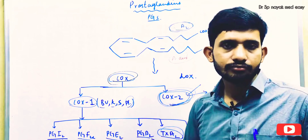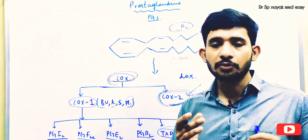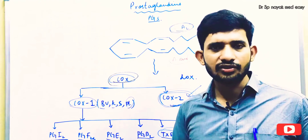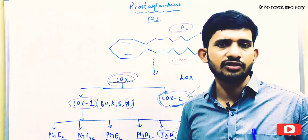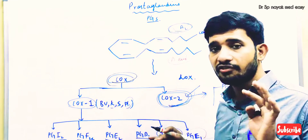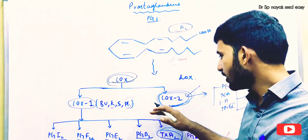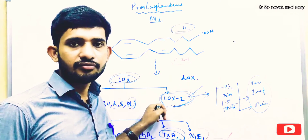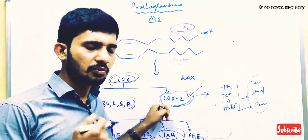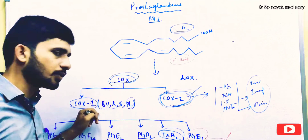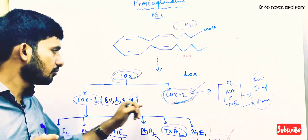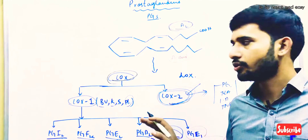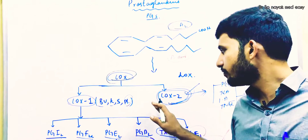COX-2 enzyme is not constitutively present in the body. It is induced only in particular situations — during inflammation, injuries, fractures, fever, and bacterial or viral infections. During inflammation, COX-2 is induced and produces some prostaglandins. COX-2 is also constitutively present in some tissues like the kidneys and brain. But COX-1 is present in almost all tissues all the time, whereas COX-2 is synthesized mainly during inflammation, though it is always present in kidneys and brain.